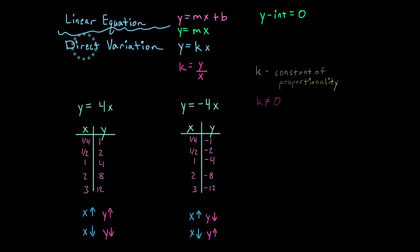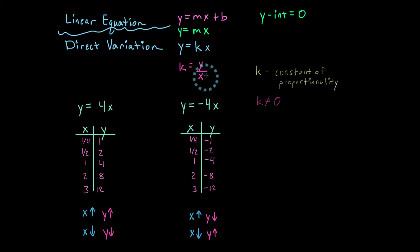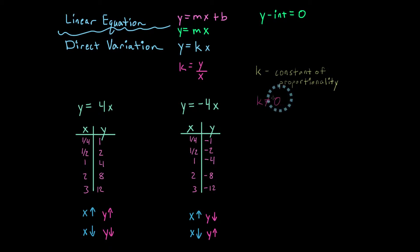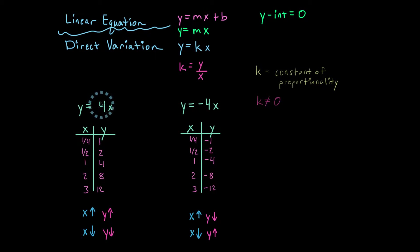Alright, so earlier I stated that you have direct variation as long as k is constant — that ratio y over x always produces the same number for that equation, and k cannot equal 0. So for this equation, y over x should always produce 4, and for this equation, y over x should always produce negative 4.